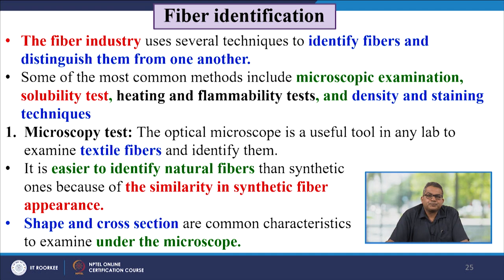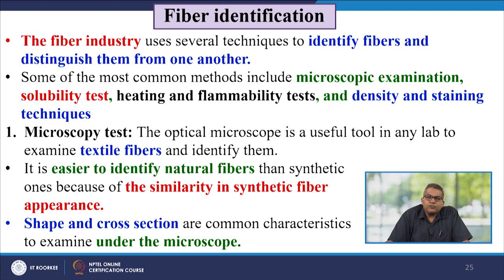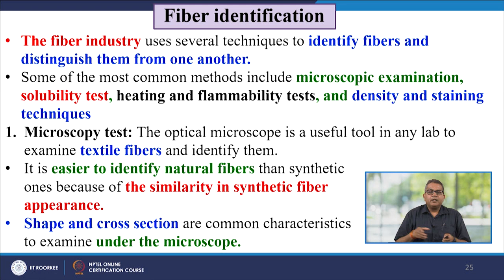The fibre industry uses several techniques to identify fibres and distinguish them from one another. Common methods include microscopic examination, solubility test, heating and flammability test, density, and staining techniques. The optical microscope is a useful tool to examine and identify textile fibres. It is easier to identify natural fibres than synthetic ones due to similarity in synthetic fibre appearance. Shape and cross-section are the common characteristics examined under the microscope.